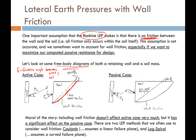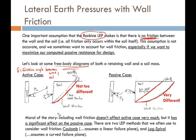But for the passive case, the real failure surface is very non-linear — very, very different from what Rankine assumes. The moral of the story is that wall friction does not affect the active case much, but it has a huge impact on the passive case. So we may want to consider wall friction, particularly for the passive case, and there are two methods to do so: the Coulomb method and the log-spiral method.